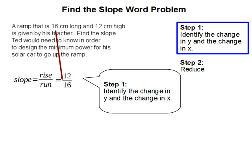So our change in y and x is given here. So 16 cm long is the change in x, and that is our run. 12 cm high is our change in y, and that is our rise.